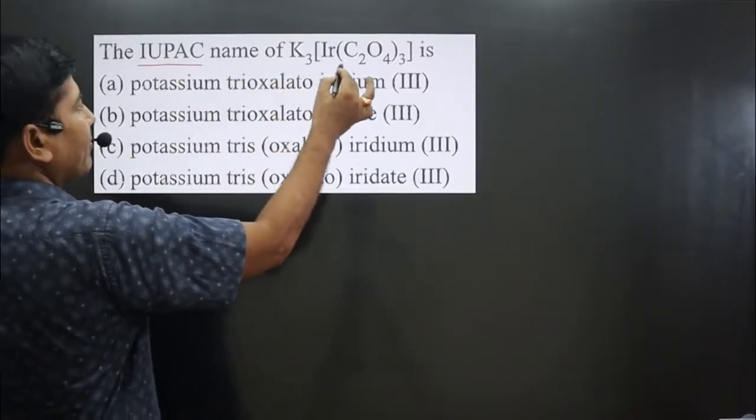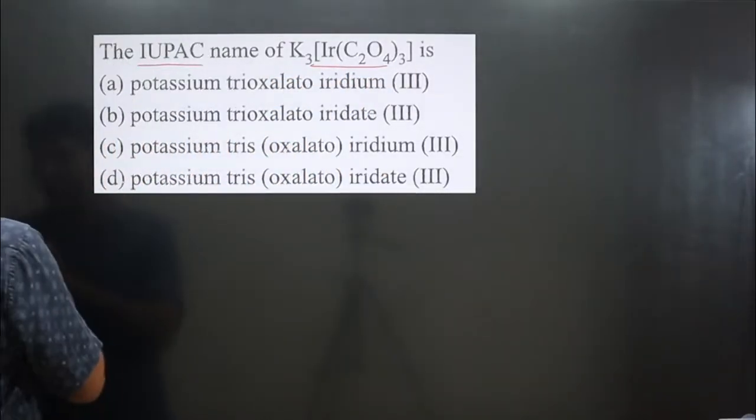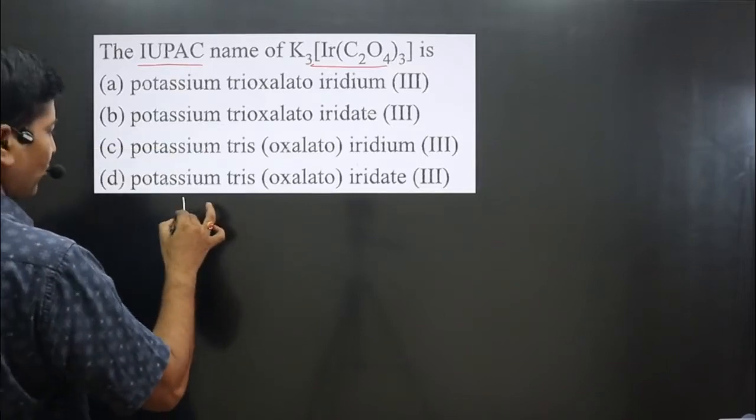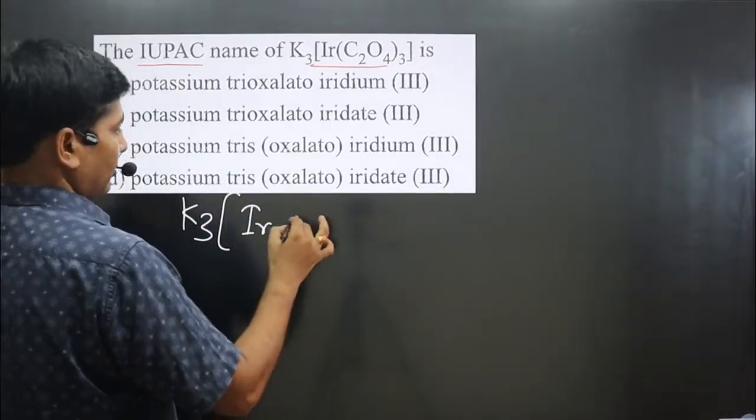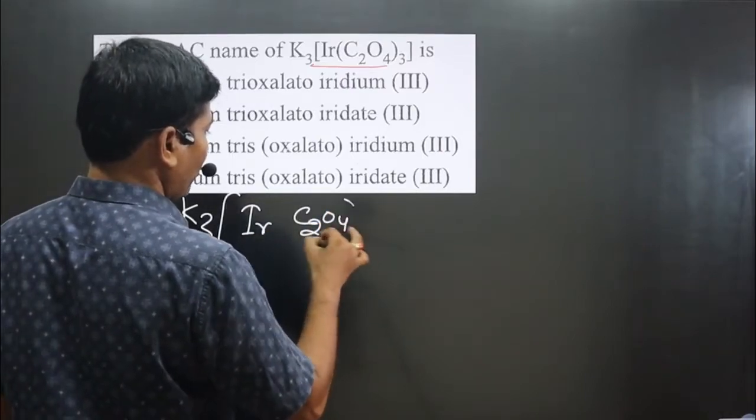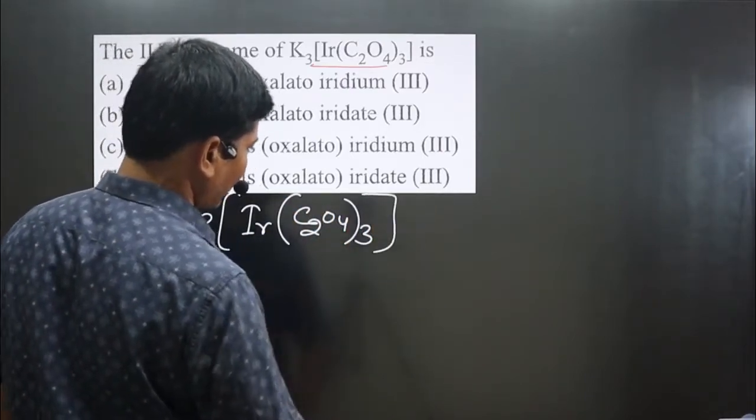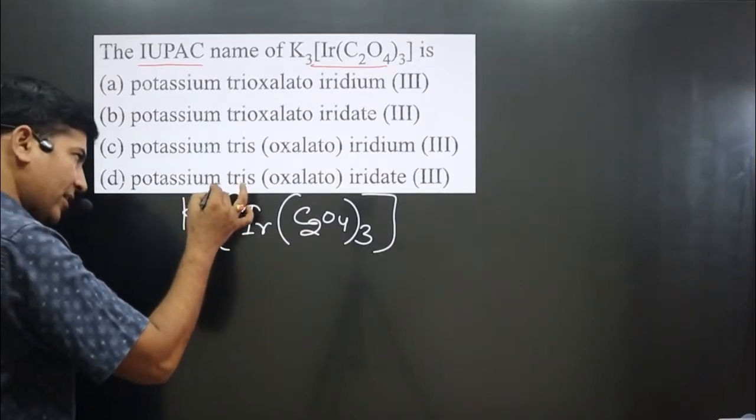The question asks for the IUPAC name of the complex. Let me write this complex: we have K₃ and iridium C₂O₄, and the whole thing is cubed. This is the complex we have. If you break this complex from here...